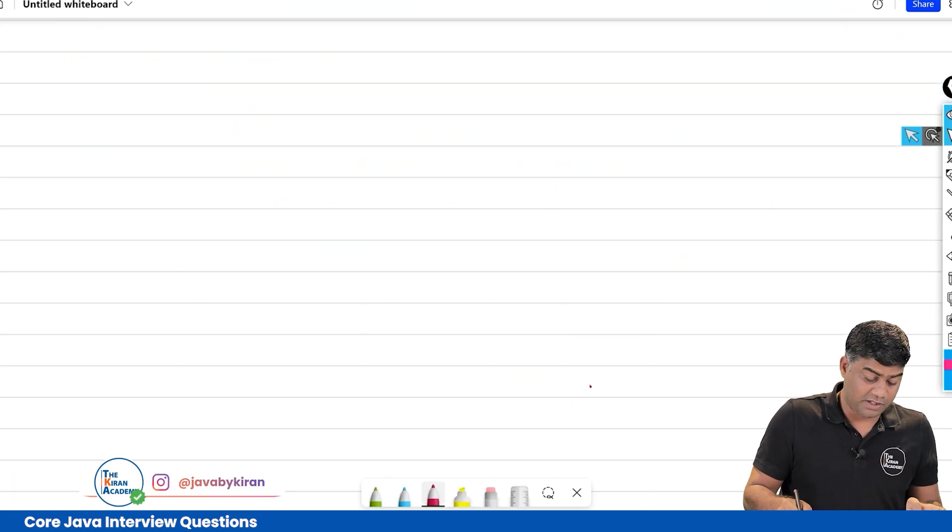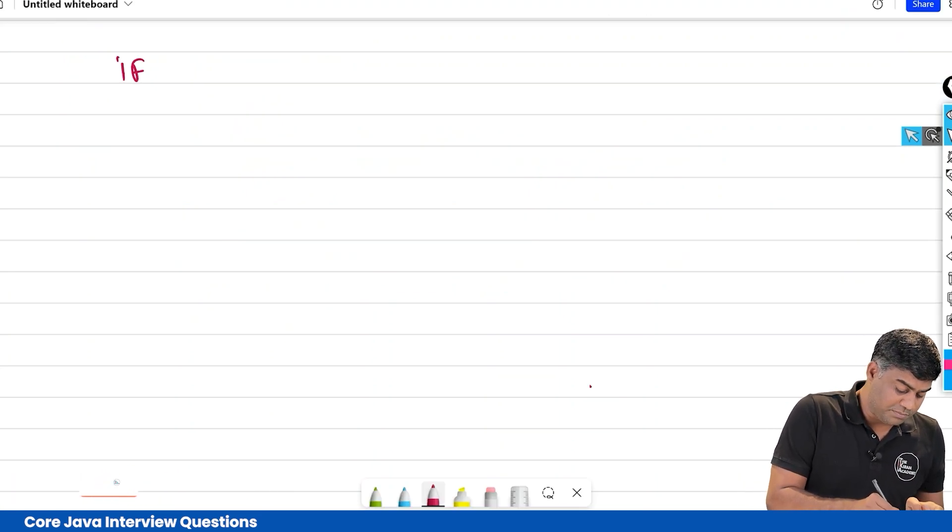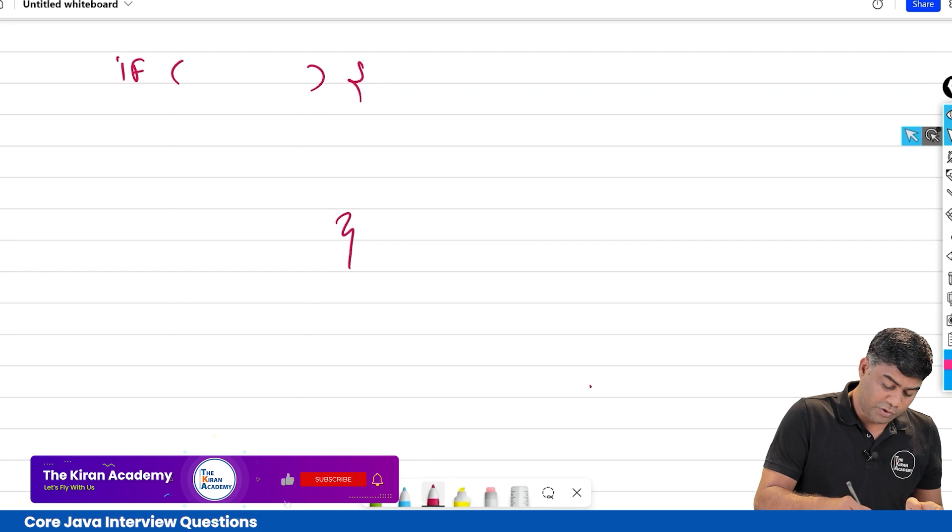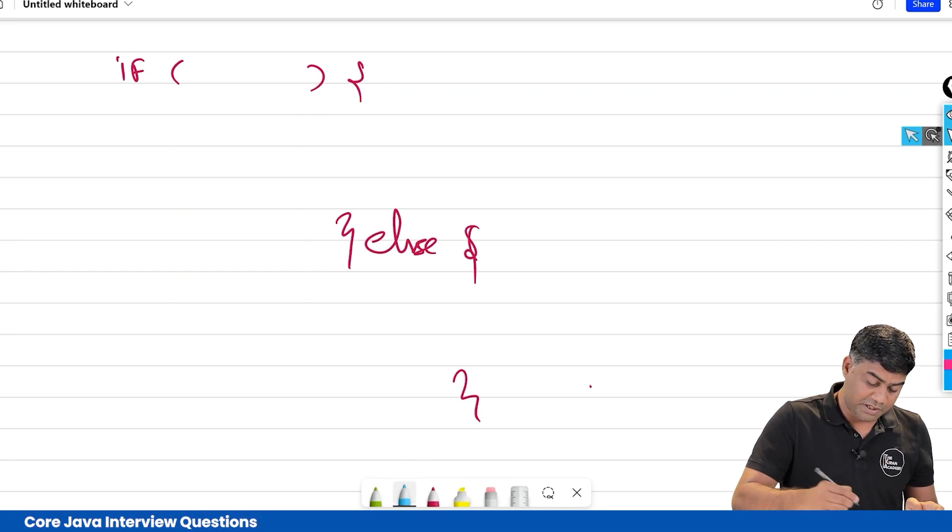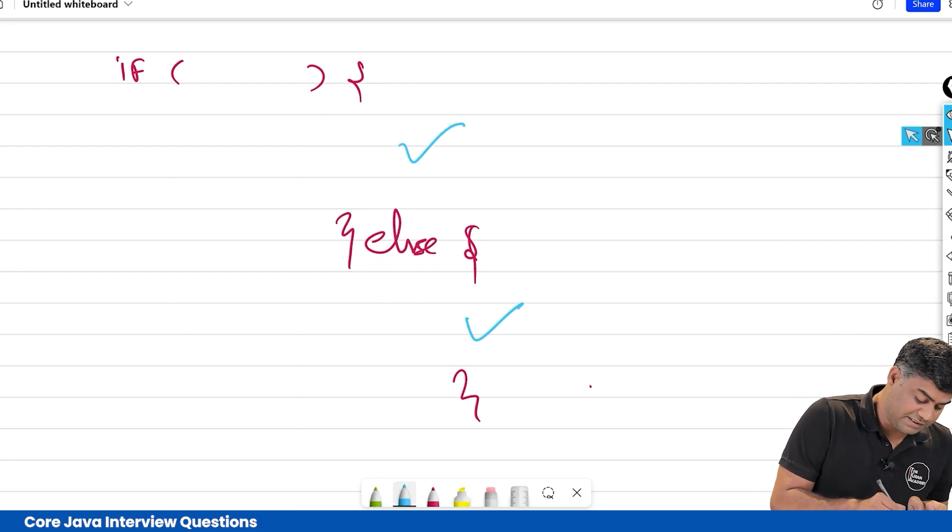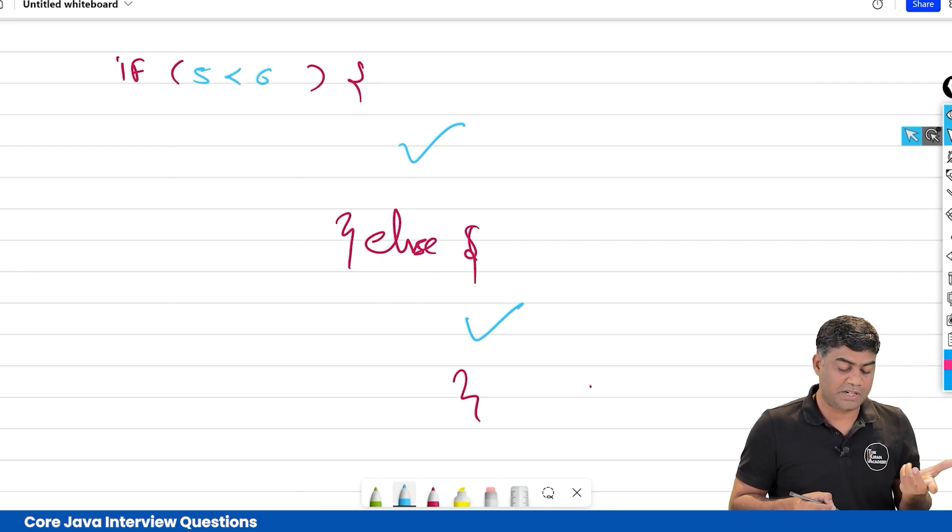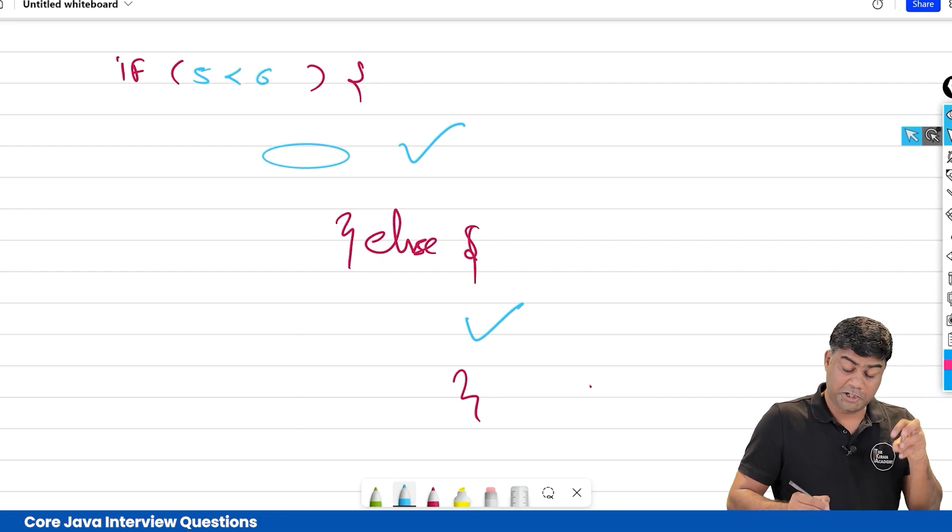You can only write else over here with no condition. If condition is true, then this will execute. If condition is false, then else executes. For example, if 5 is less than 6, it's a true condition, so this is going to happen. If not, then else will execute.